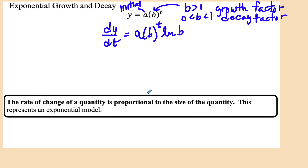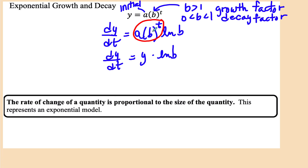What you hopefully notice is that the portion a times b to the t is just y. So we can write dy/dt equals y times the natural log of b. Now b is a number, so the natural log of b is some constant. Instead of writing natural log of b, we can write it as the constant k times y.